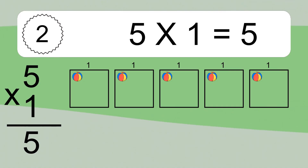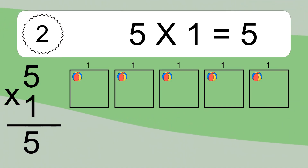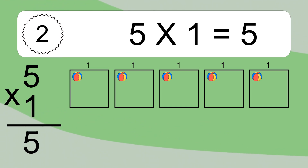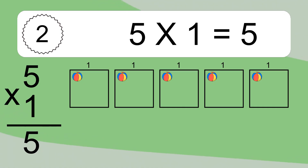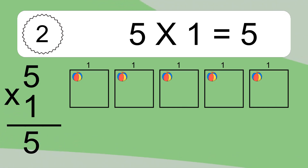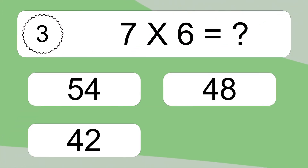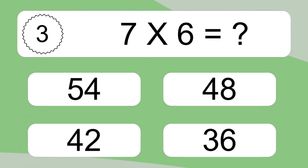We have 5 boxes, and each box has 1 colorful ball inside. If you count all the balls in all the boxes together, you will have 5 times 1 balls. This equals 5 balls.